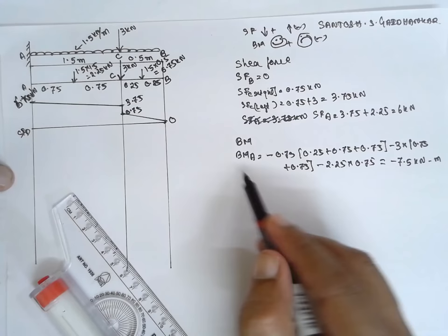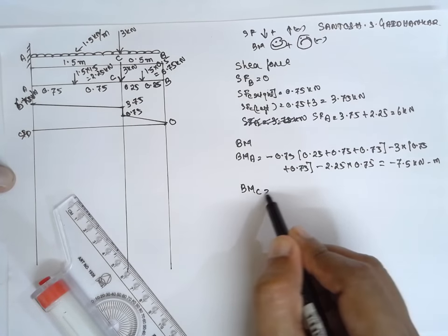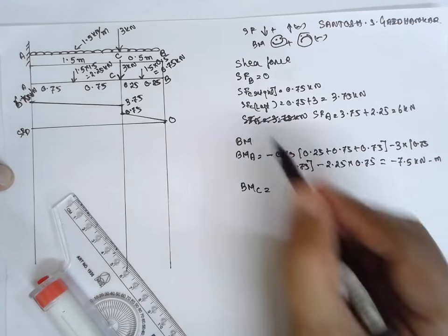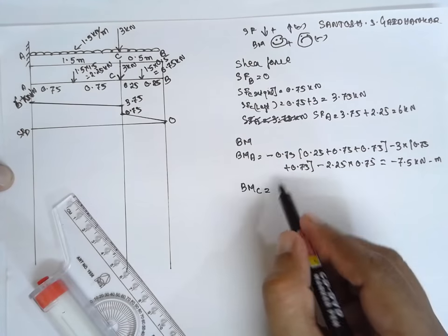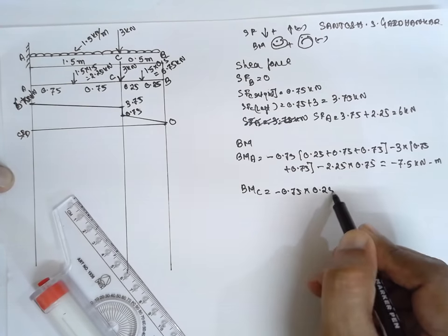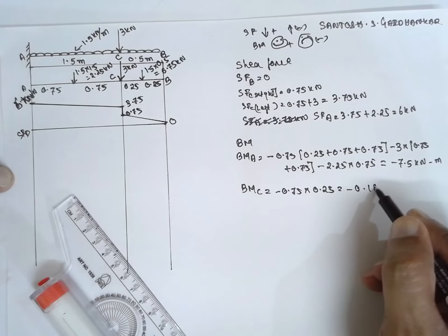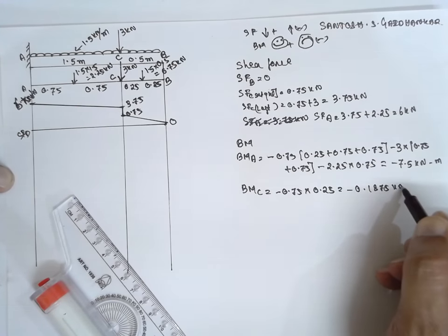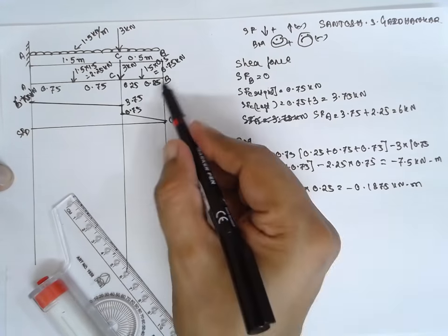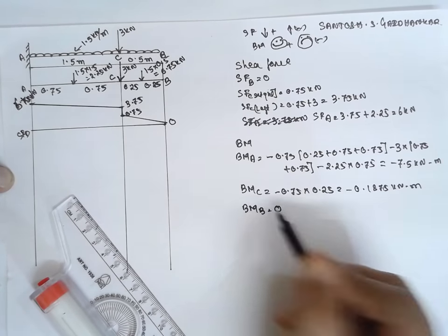Next is I will go for C. BM at C. This load, it is this part minus 0.75 into 0.25. Answer is minus 0.1875 kilonewton meter. Bending moment at B will be 0. Draw the line.